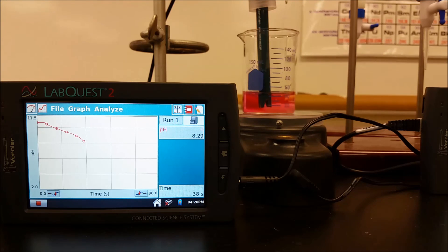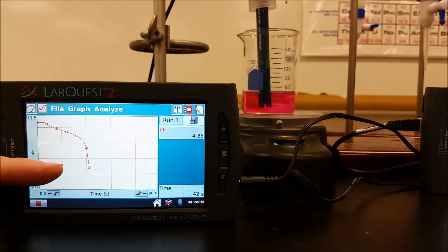So now you can see that we're starting to get a color change and there's our color change right there. And you can see that we're at the point where we're at our equivalence point, we're getting that large slope. And so therefore, our endpoint and equivalence point are close together.